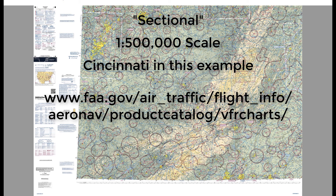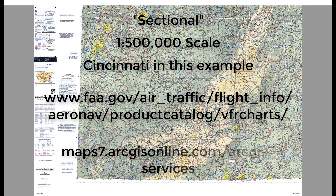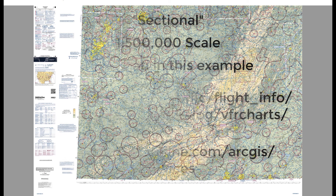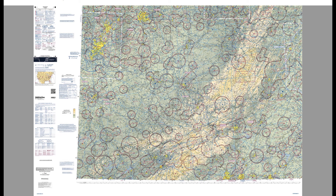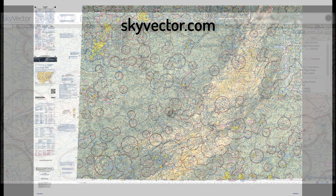You can also get sectionals from an aviation app on your tablet or smartphone, or use a website like Skyvector. Also, if you use ArcGIS, you can stream them from the ArcGIS server. Now that you know what a sectional is and where to find one, let's quickly go over how to use Skyvector. I would like to note that we're not promoting any specific site or service — Skyvector is just what I use for work and teaching.